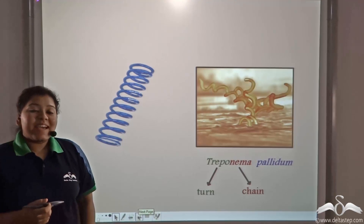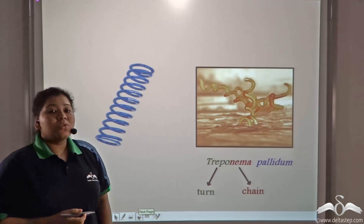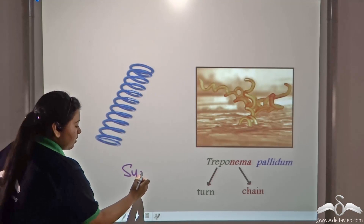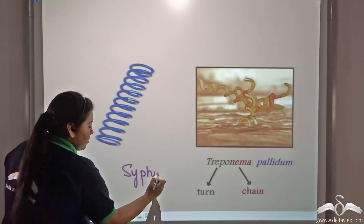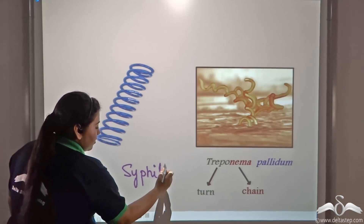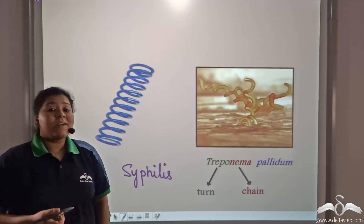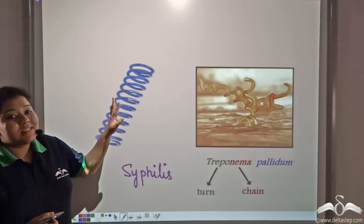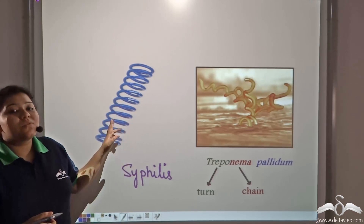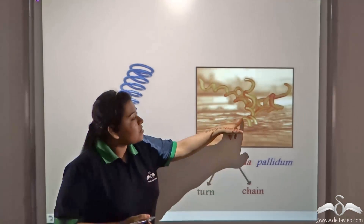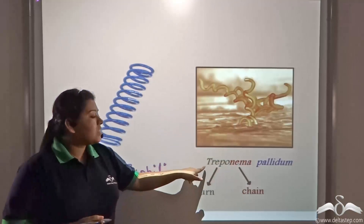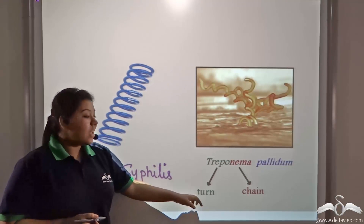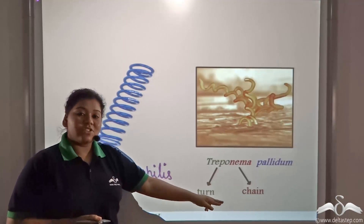A sexually transmitted disease known as syphilis had caused widespread death in Europe. Syphilis was caused by a spiral-shaped bacteria known as Treponema pallidum, where 'Trepo' means turn and 'Nema' means a chain.